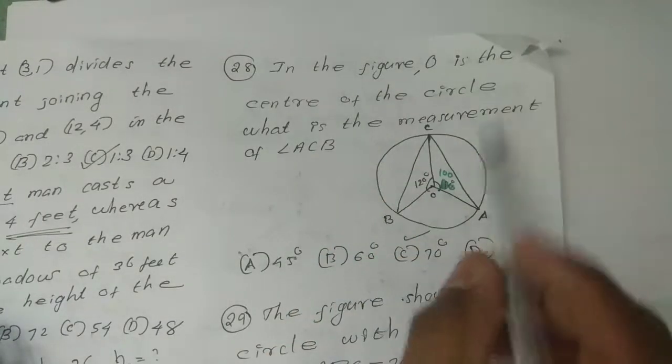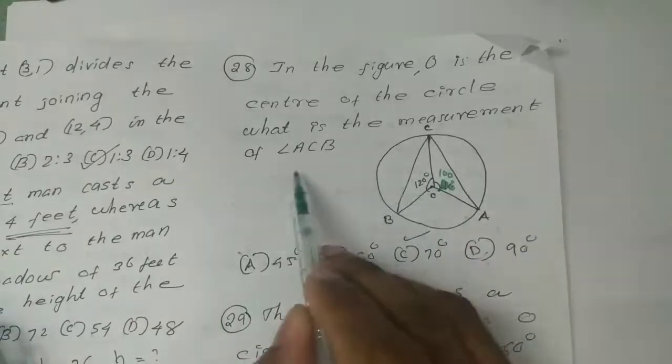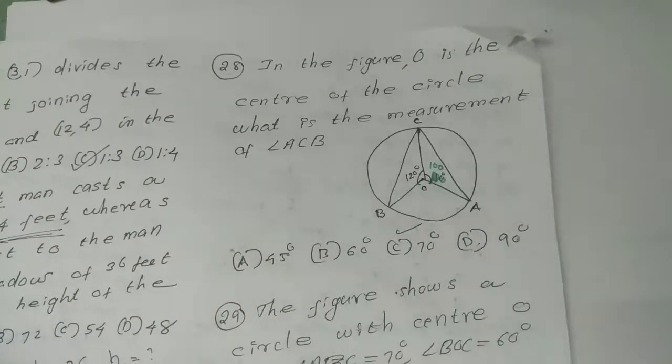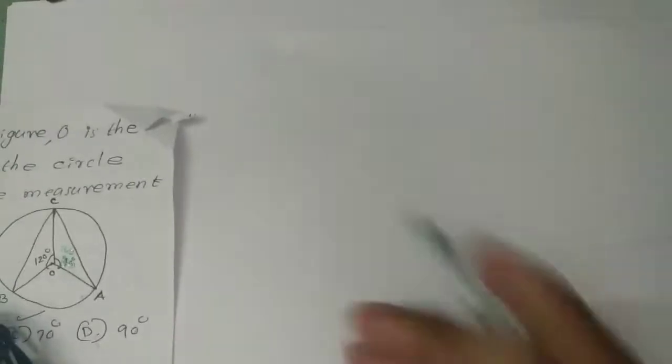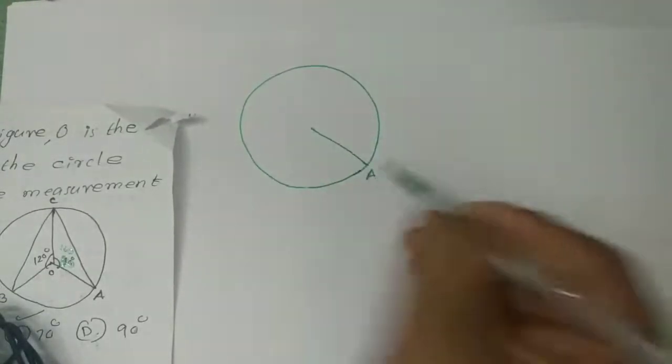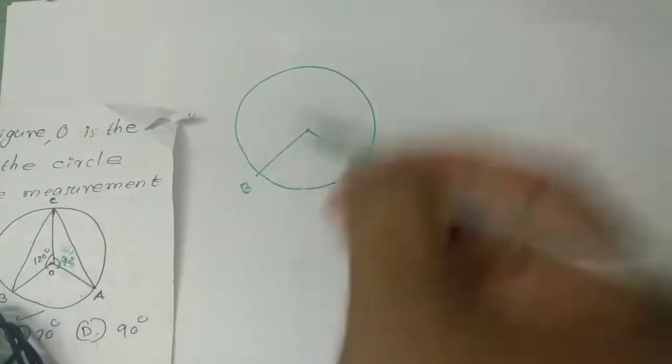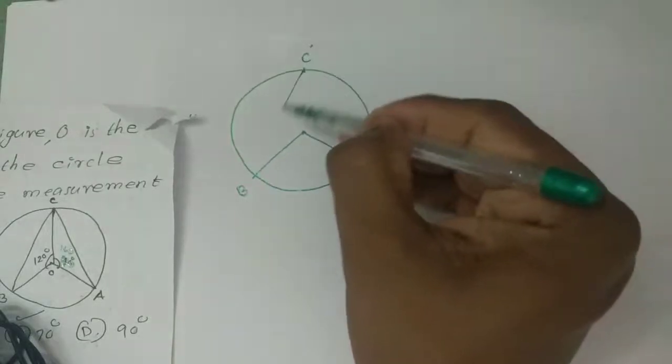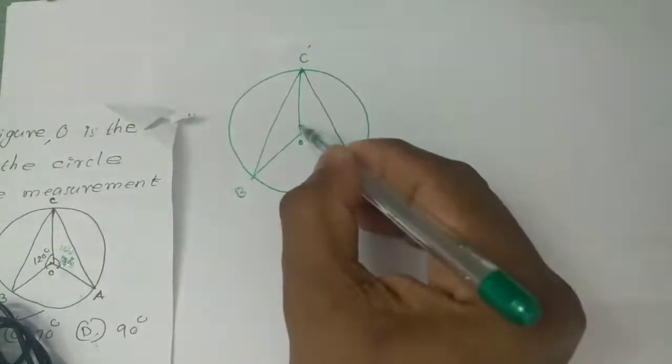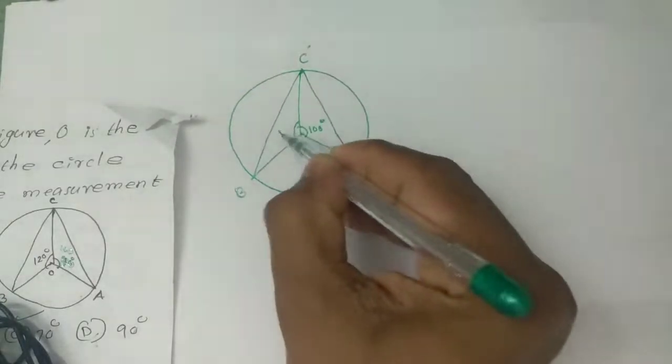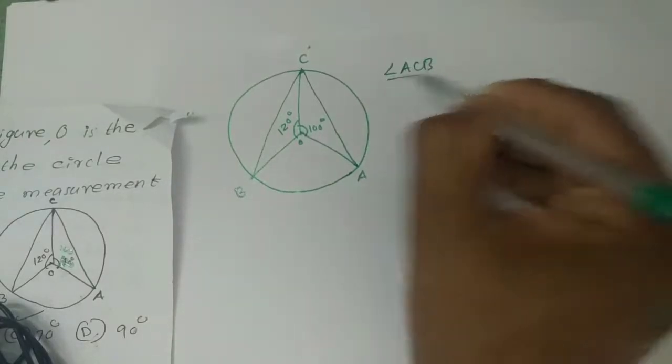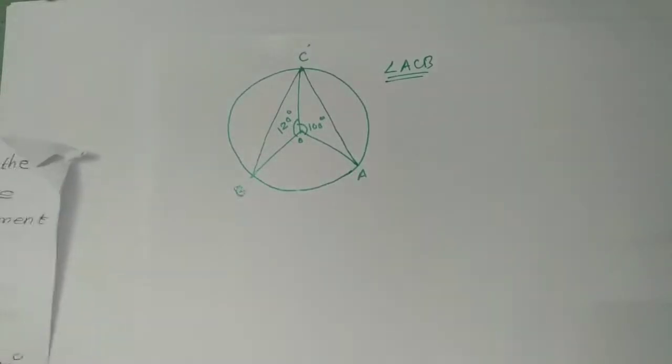Next question: In the figure, O is the center of the circle. What is the measurement of angle ACB? Angle ABC is given. I am going to draw the circle with center O and determine the angles. This angle is the center angle.